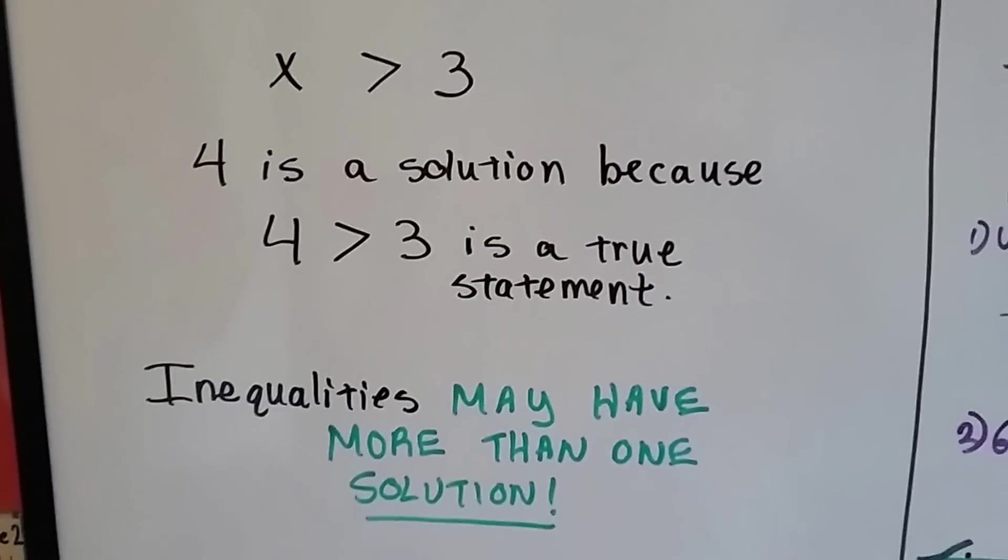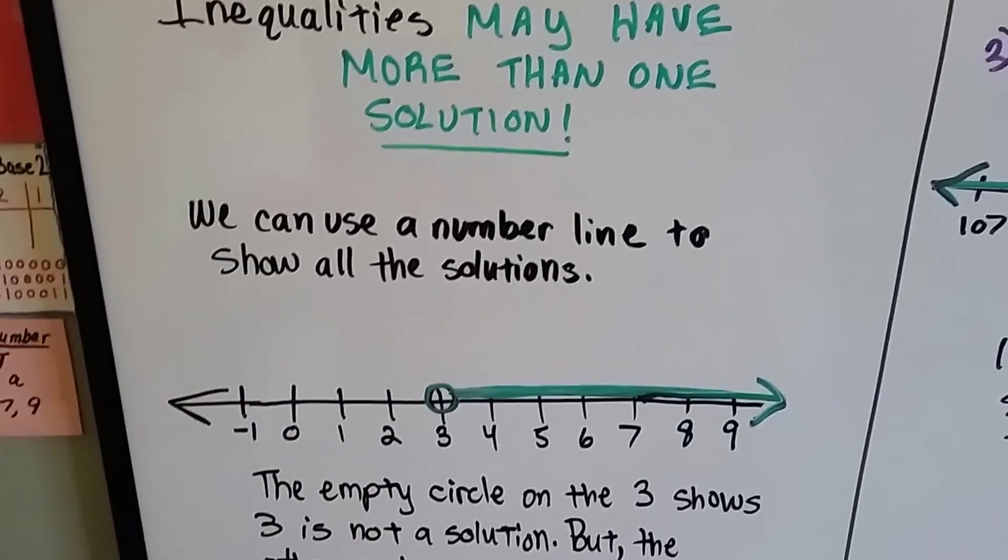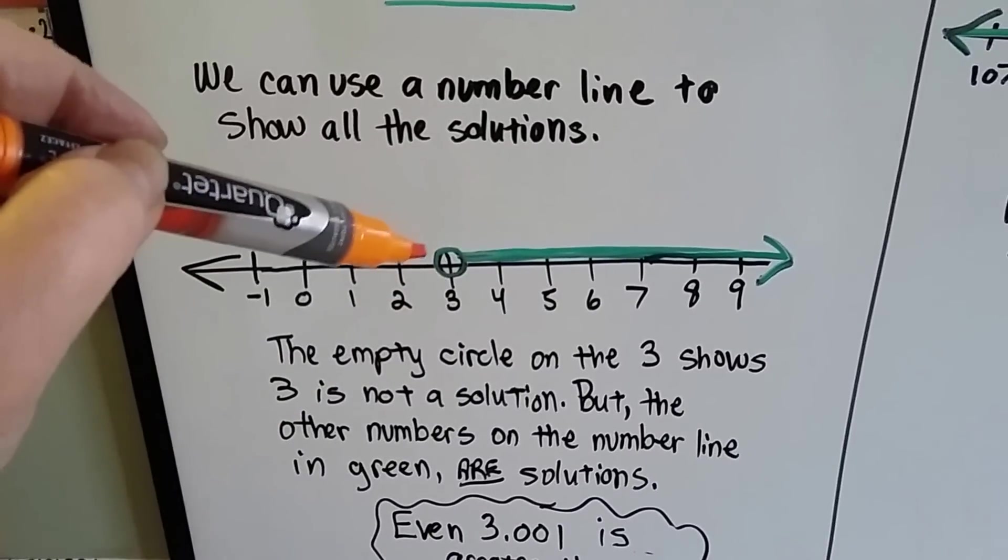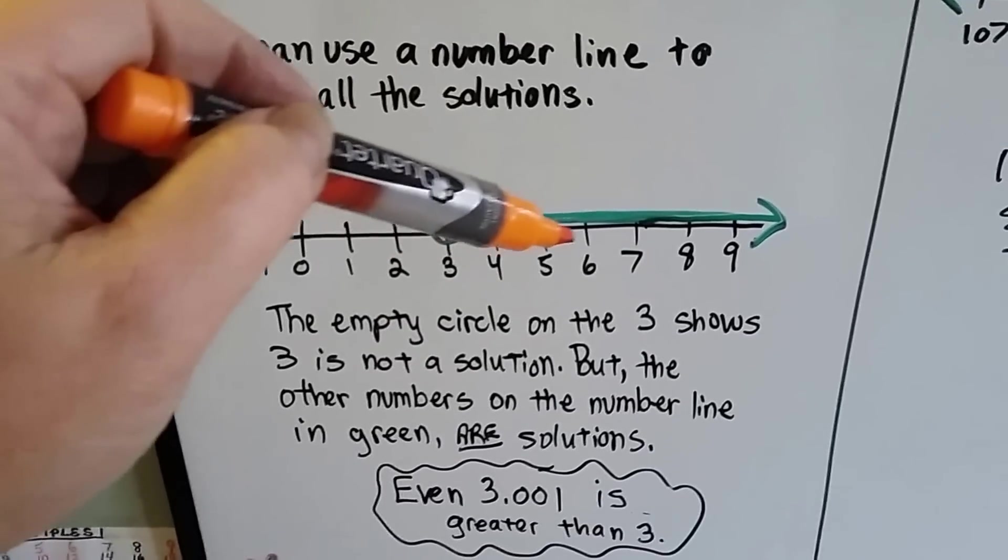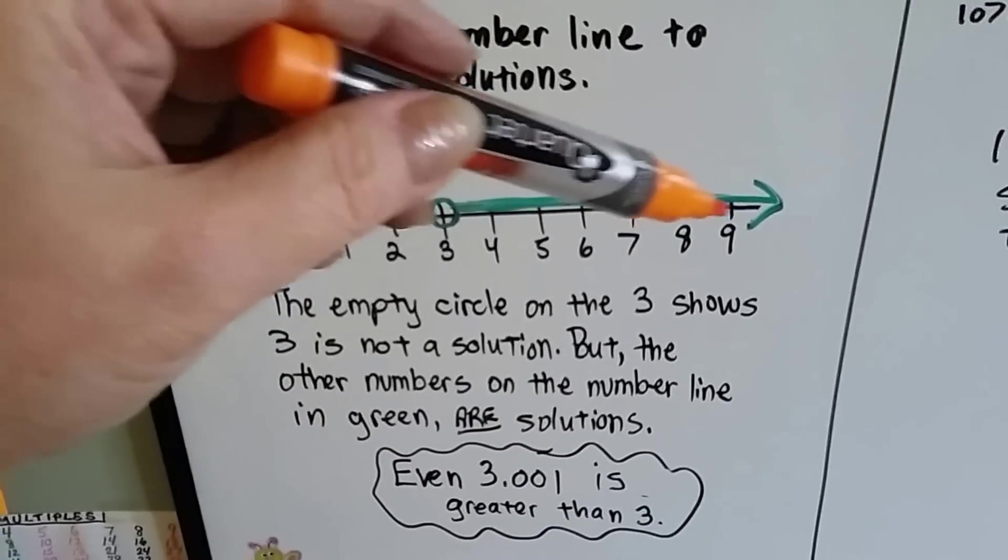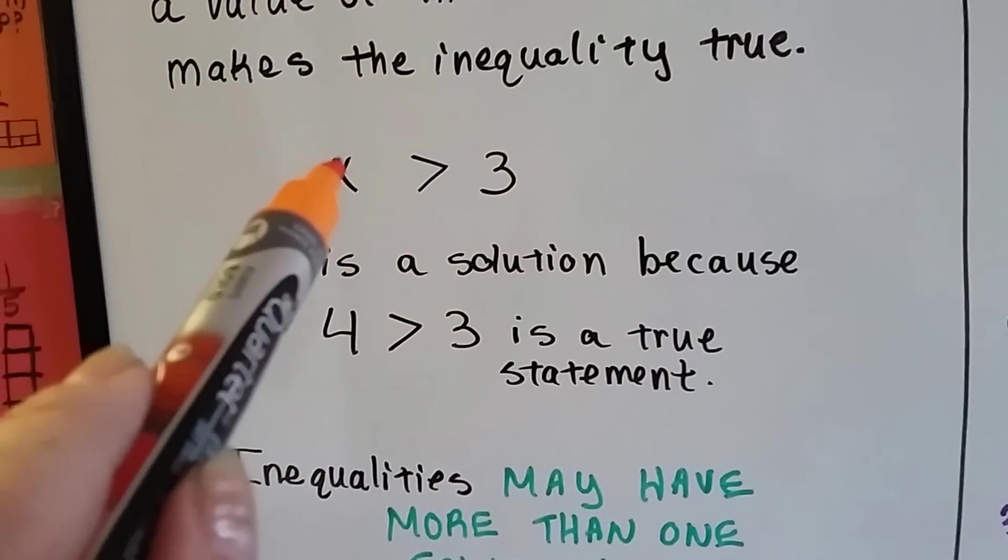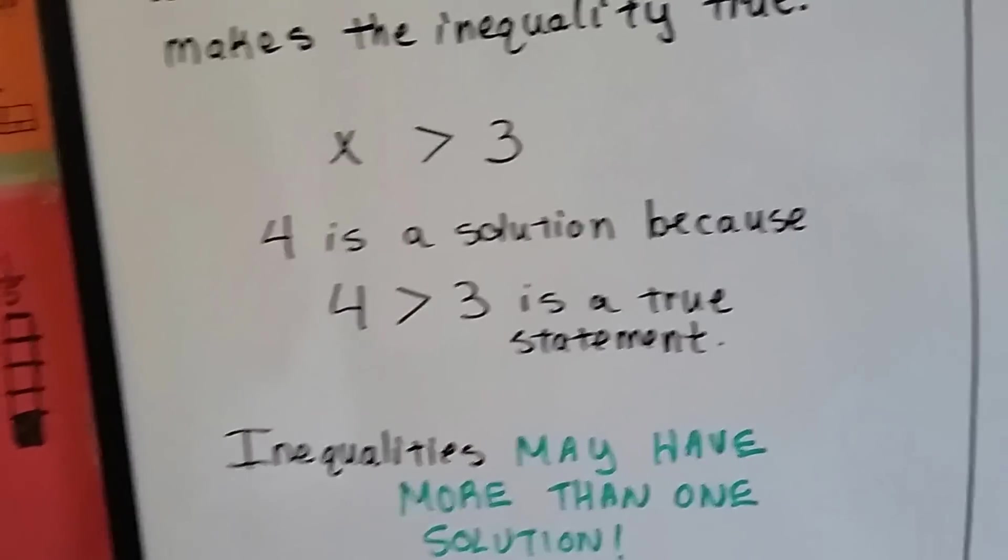So inequalities may have more than one solution, and we can use a number line to show all of the solutions. An empty circle on the 3 shows that 3 is not a solution. But the other numbers on the number line in green are solutions. Even 3 and 1 thousandth is greater than 3. So even if it was 3.001, it would be greater than 3 by itself.